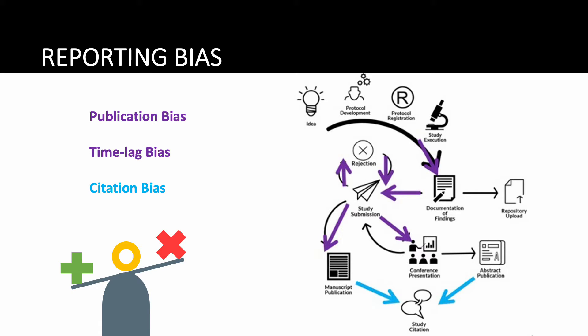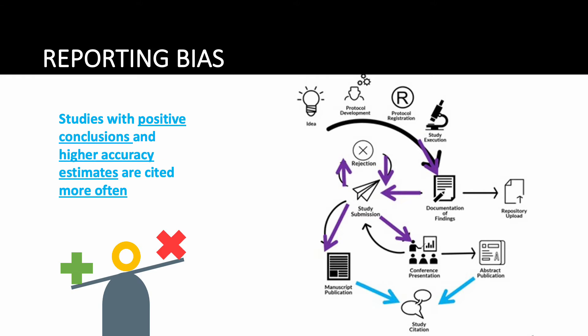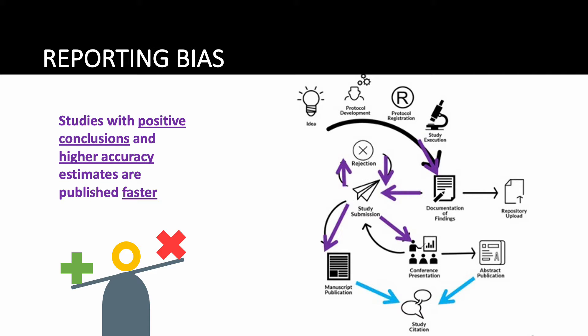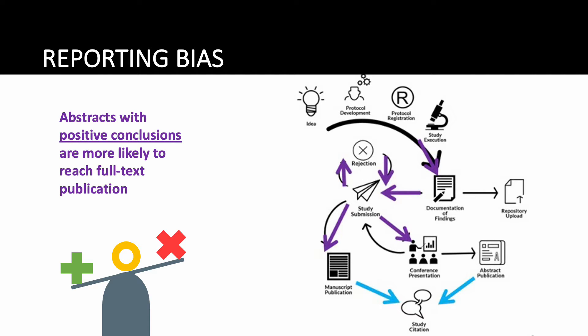If some negative studies are never published, this is considered publication bias. Among published studies, if positive findings are cited more often, this can result in citation bias. In all of these cases, the published literature provides a falsely optimistic view of the accuracy of ultrasound. Our recent work has provided evidence for reporting bias in imaging research — studies with positive conclusions and higher accuracy estimates are cited more frequently and published more quickly, and conference abstracts with positive conclusions are more likely to achieve eventual full-text publication.